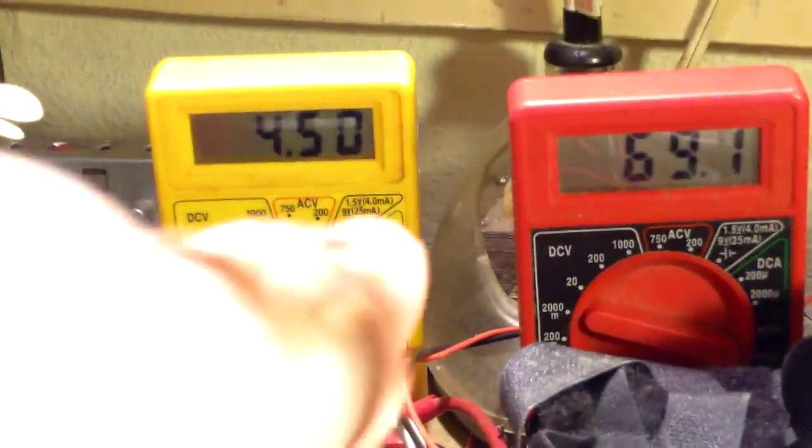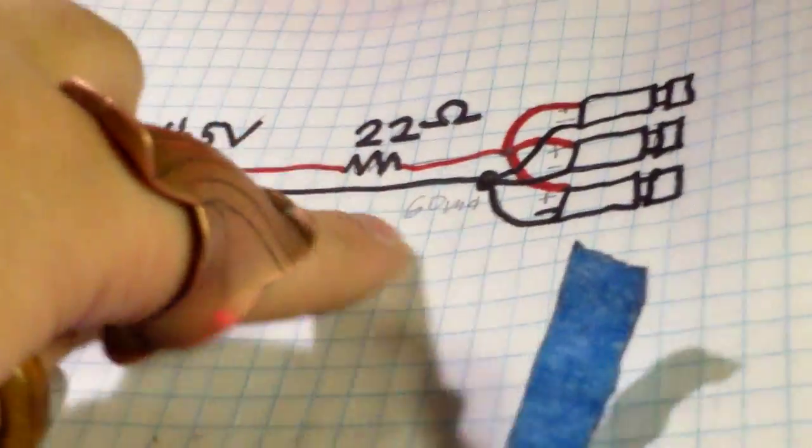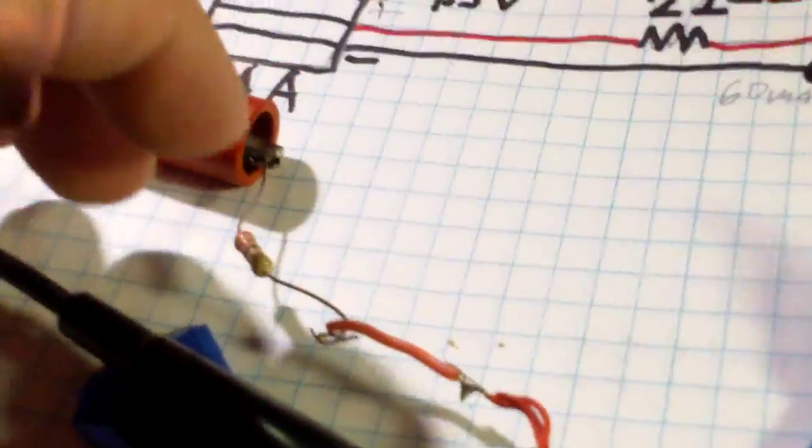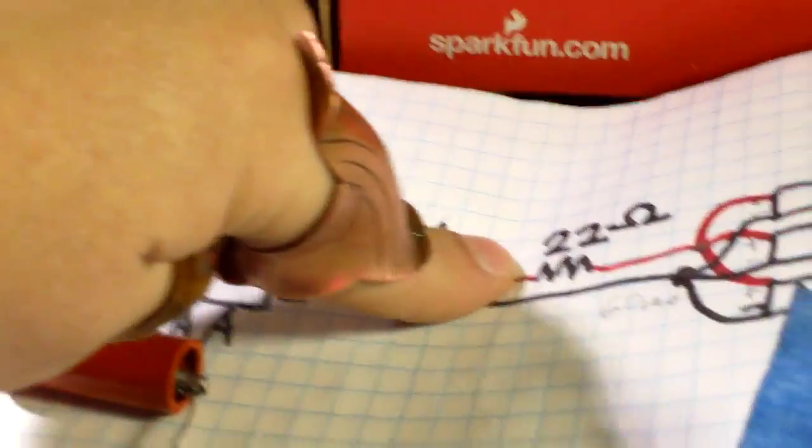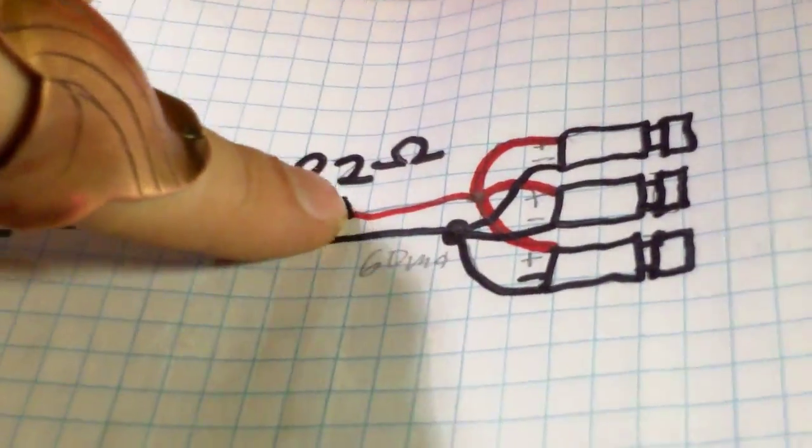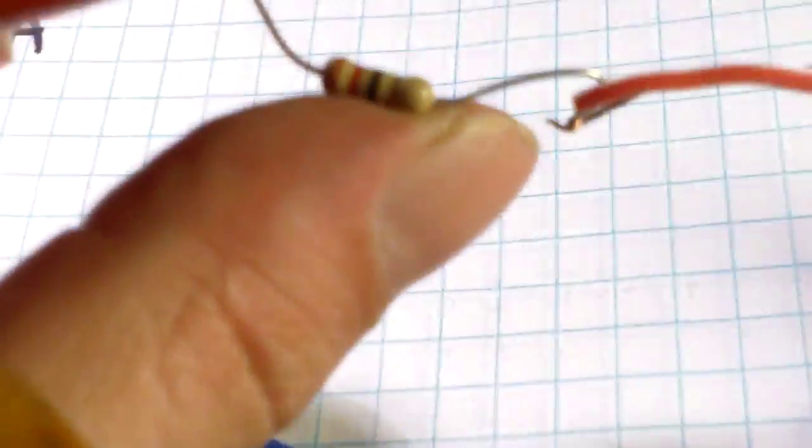All right, so 4.5 volts, that's what we're supposed to have inside of our little battery pack. Sorry, I only have about three minutes of video on my card because of other stuff. Anyways, 4.5 volts is simulating our power coming in.